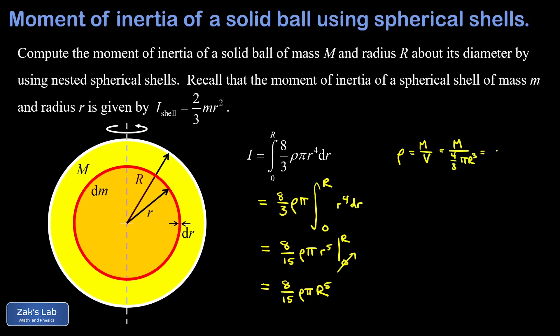Just to keep things simpler, I'm going to write this as a single fraction. And that's three m over four pi R cubed. Now we just replace the rho in our expression for the moment of inertia. And we start to clean things up.